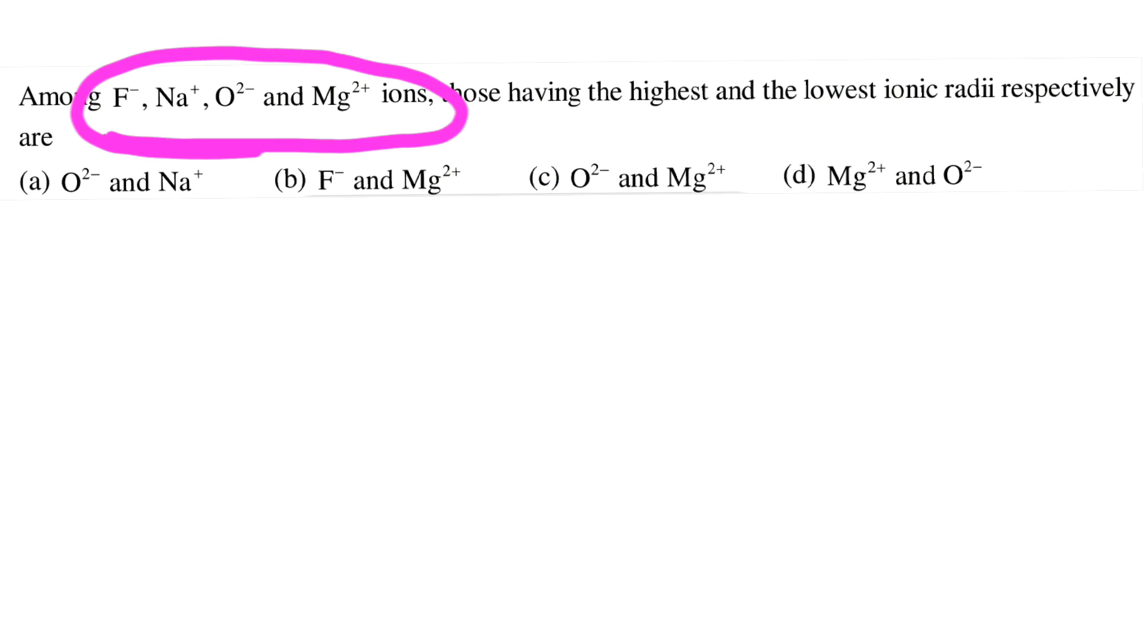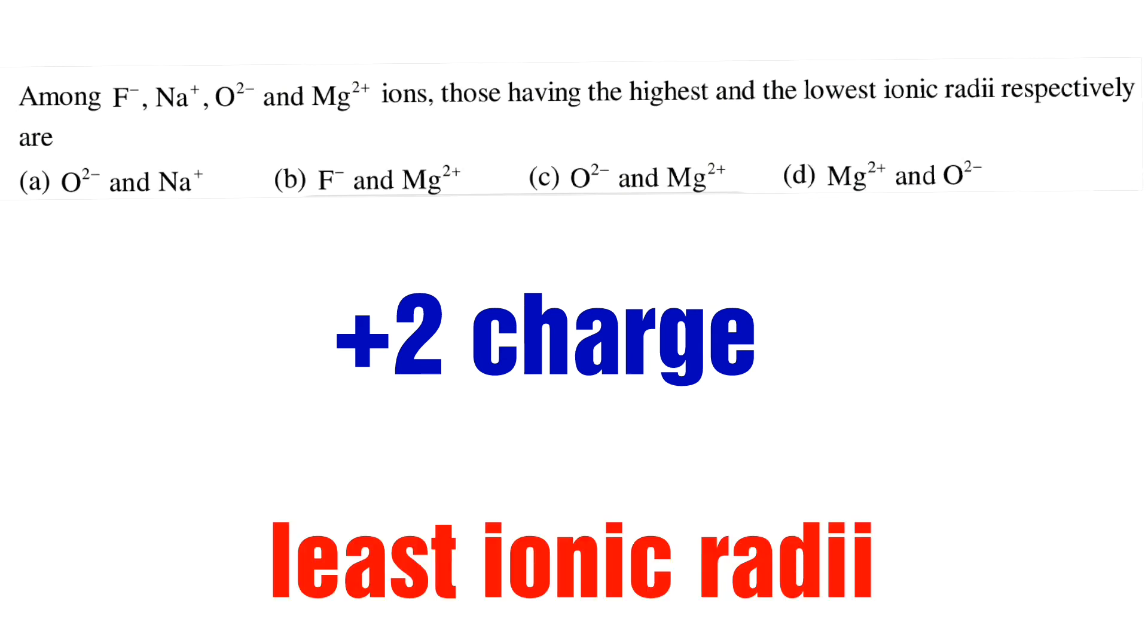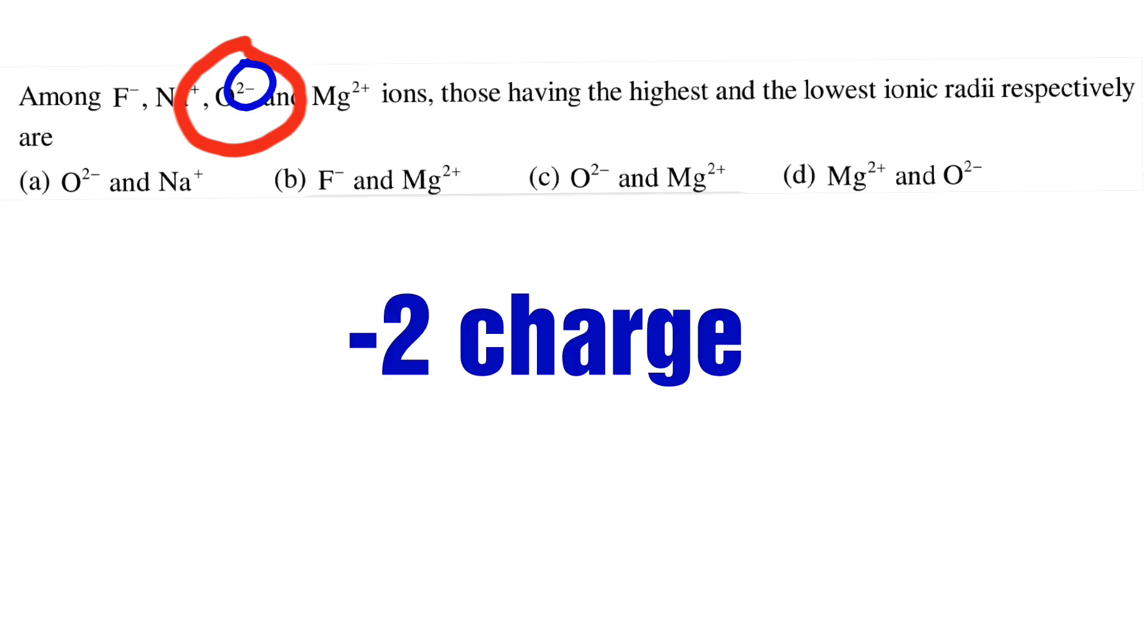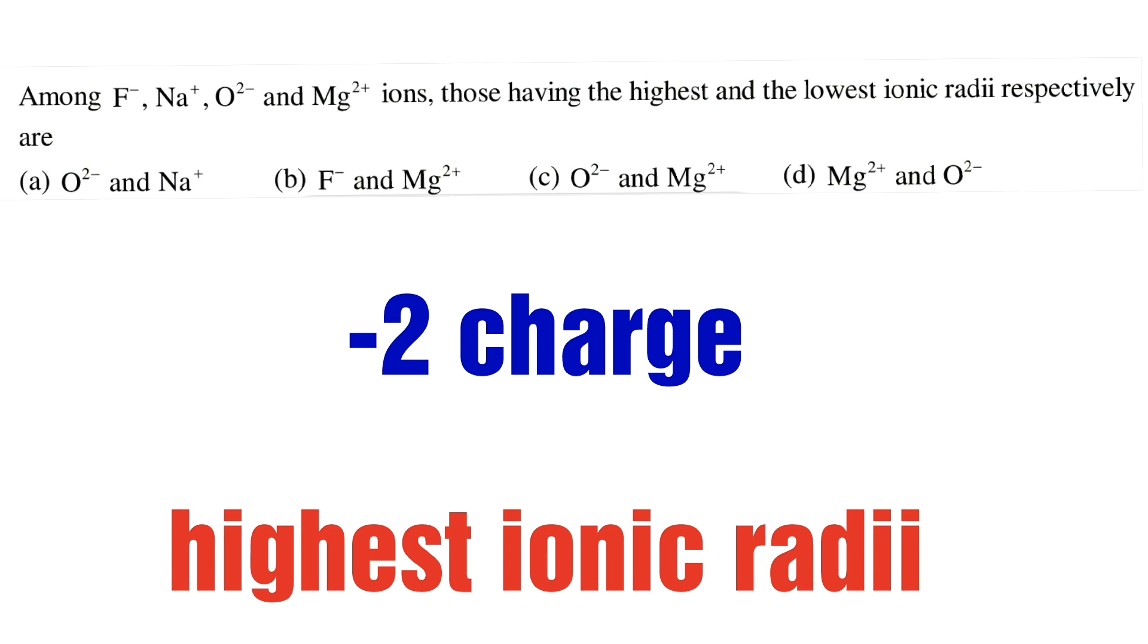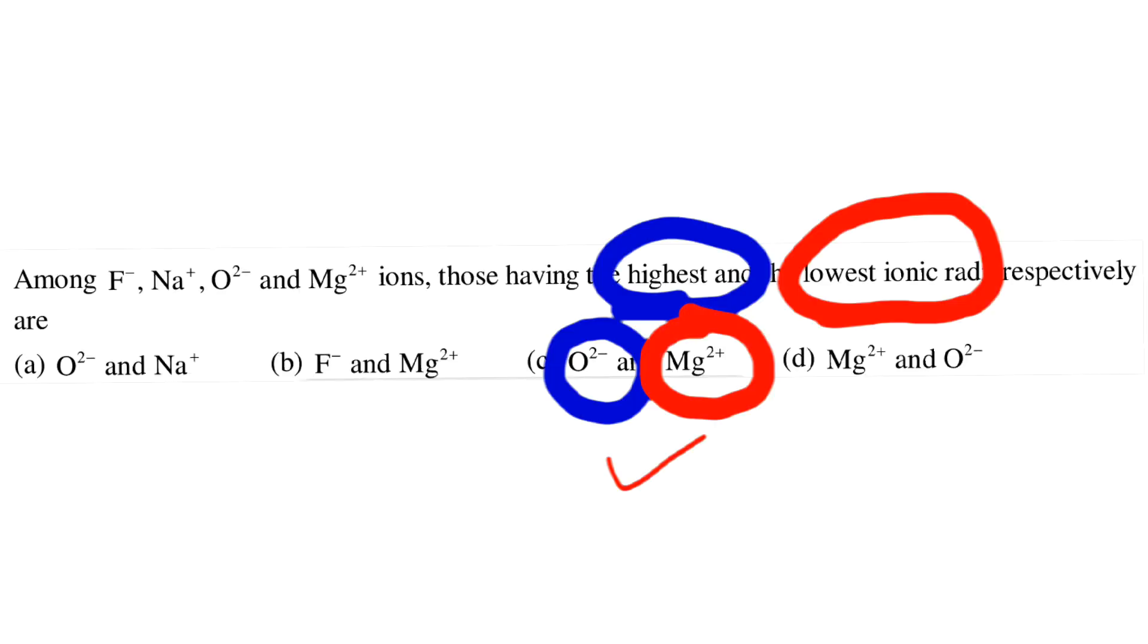Among these options, this option has the highest positive charge, so it will have the least ionic radii, and this one has the highest negative charge, so it will have the highest ionic radii. So option C is the right choice.